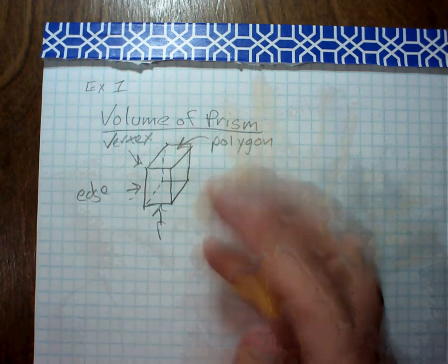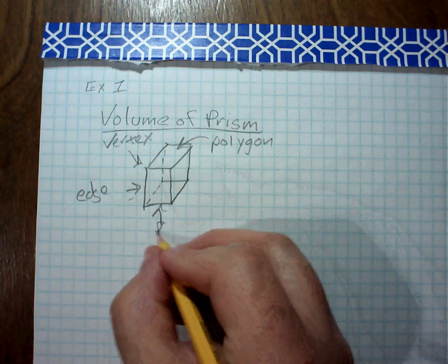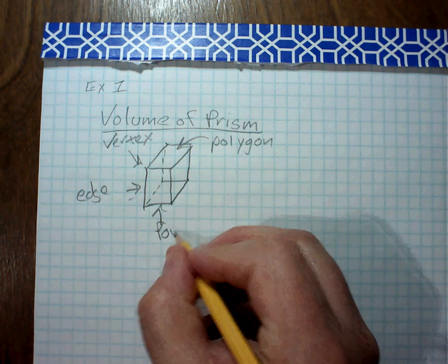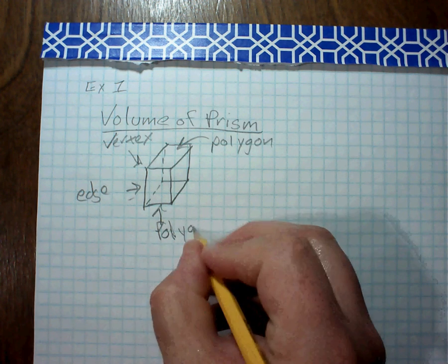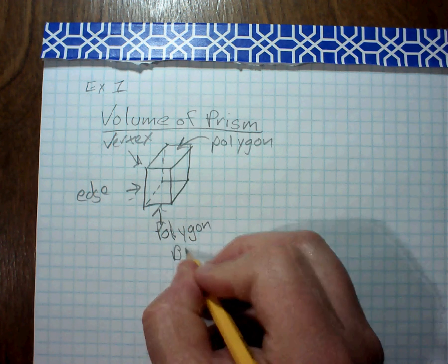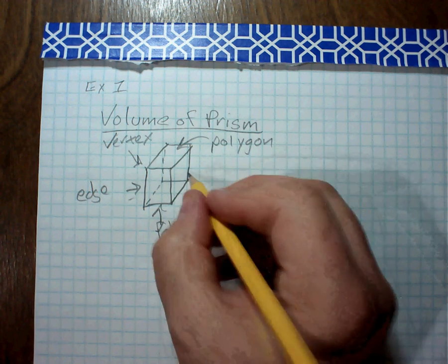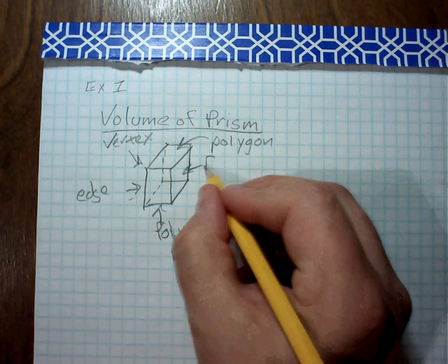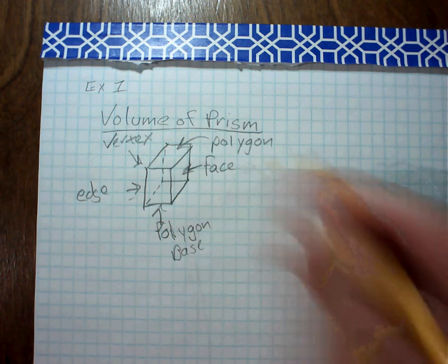Well, this is called a polygon base. So the polygon part is called the base. And then this would be called the face, the little rectangular shapes.